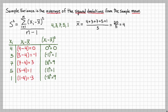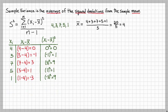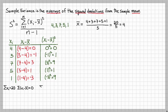Now let's find the sums of the columns. The sum of all data points is 20. The sum of the deviations from the mean is 0 — this will almost always be 0, though it may be slightly off if you have to round. The sum of the squared deviations from the mean is 20.